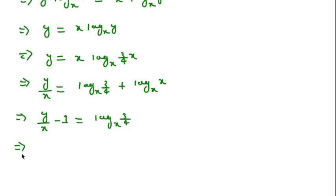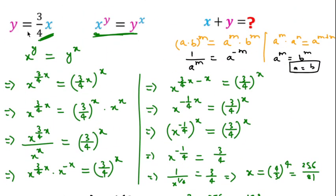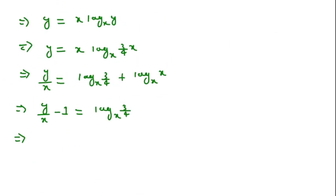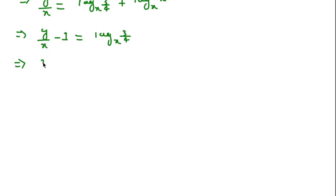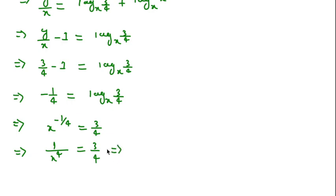Since y equals 3 over 4x, we get y over x equal to 3 over 4. Substituting, we have 3 over 4 minus 1 equal to log base x of 3 over 4, which gives minus 1 over 4 equal to log base x of 3 over 4. By the logarithm definition, x to the power minus 1 over 4 equals 3 over 4. Raising both sides to the power 4, we get 1 over x equal to 3 over 4 to the power 4, so x equals 4 over 3 to the power 4, which is 256 over 81.